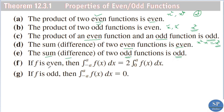If f is an even function, then the integral from -a to a of f(x) dx equals 2 times the integral from 0 to a of f(x) dx. If f(x) is odd, then the integral from -a to a of f(x) dx equals 0. These two results can be used in finding Fourier series.